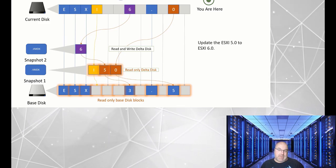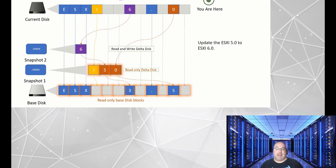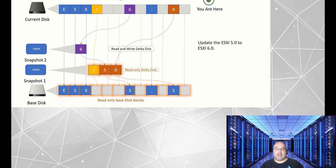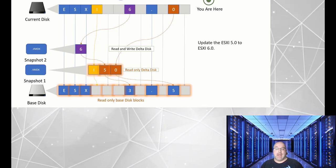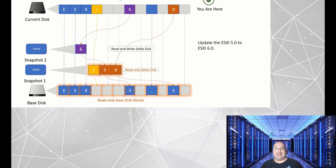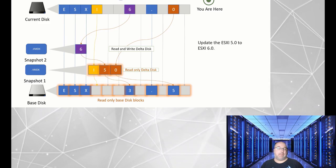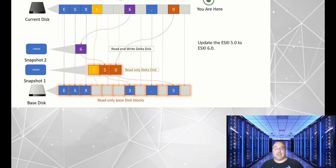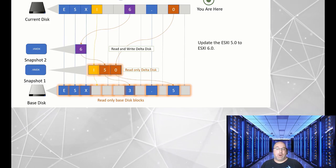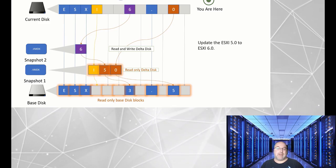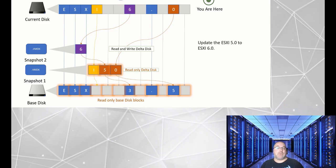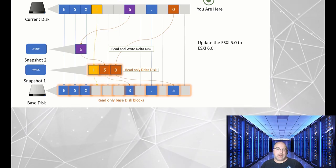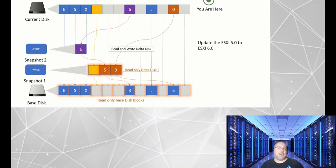So, there you have it. Snapshots work by capturing the difference between the current state and the original state of the virtual machine. Every time a block from the base disk or a previous snapshot is changed, the snapshot operation saves it to the current delta or snapshot.vmdk file. This allows you to revert to a previous state and manage the changes made to your virtual machine.